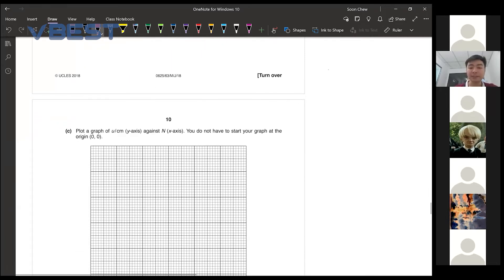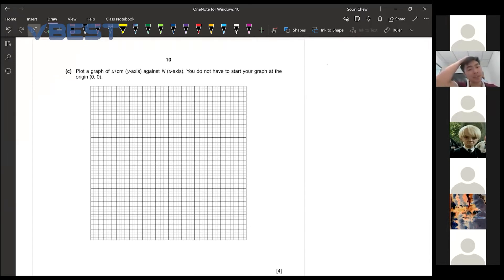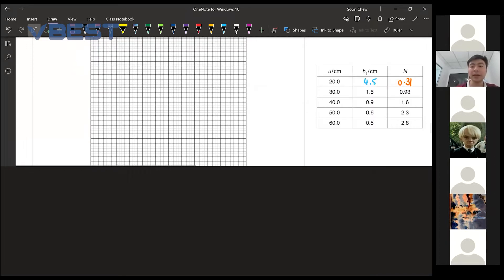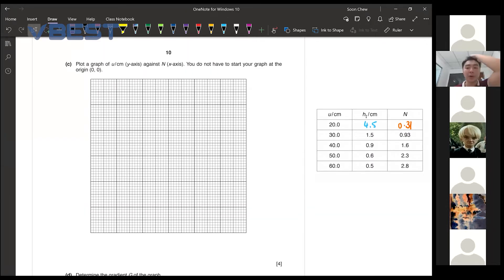Now, part C. Plot a graph of U against N. You do not have to set your graph as the origin. Let me grab the picture here first so you guys can see. When you guys are plotting your graph, be sure to plan your graph first before you actually put it in.